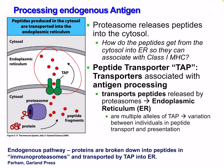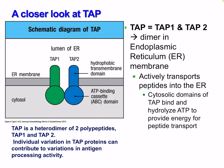The proteasome releases these peptides into the cytosol. TAP transporters — associated with antigen processing — transport peptides released from the proteasomes into the ER. There are multiple alleles of TAP with variation between individuals affecting peptide transport and presentation, and there are also some disorders involving TAP. In the endogenous pathway, proteins are broken down into peptides by immunoproteasomes and transported by TAP into the ER.